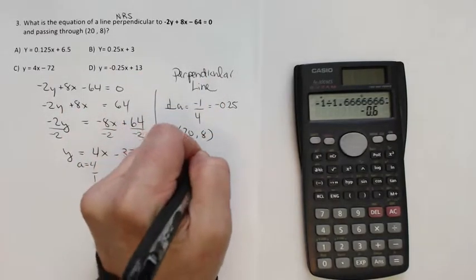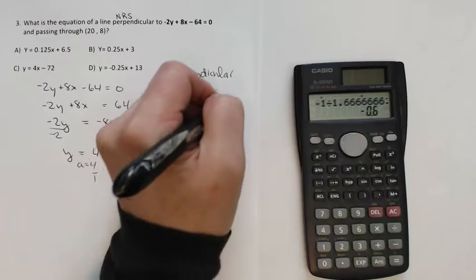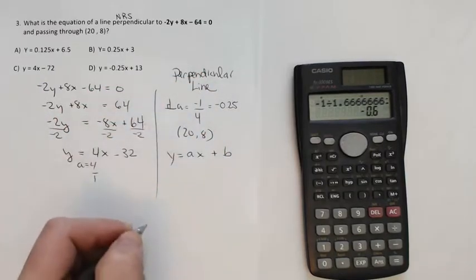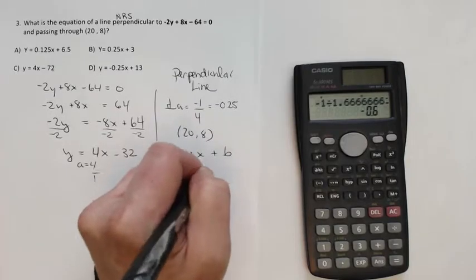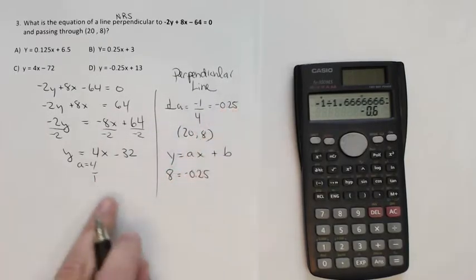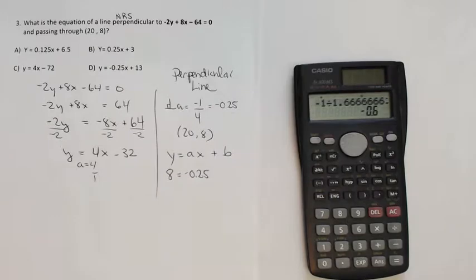y equals ax plus b. We know the a, and we have an x and a y. 8 equals negative 0.25. Make sure you use that new slope, the one that you calculated from the original, because it is the perpendicular line.